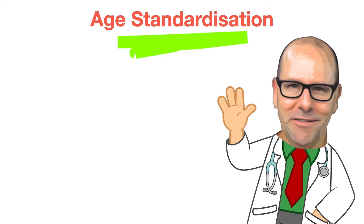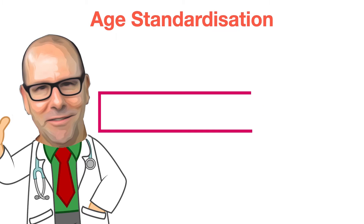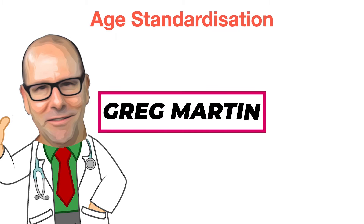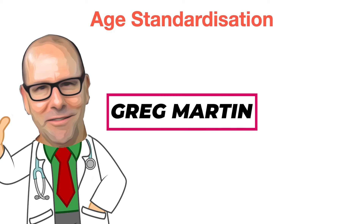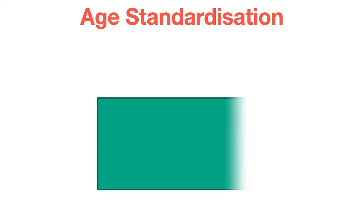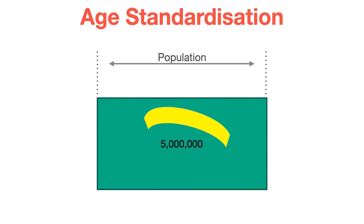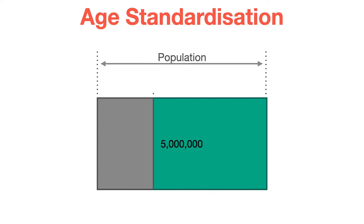Let's talk about age standardization and age adjustment. This is easy — stick with me. My name is Greg Martin, and at the end of this video I promise you, you are going to understand this. Let's imagine that we've got a population of about 5 million people. Of those 5 million people, 90,000 of them die of some kind of disease — let's say cancer.